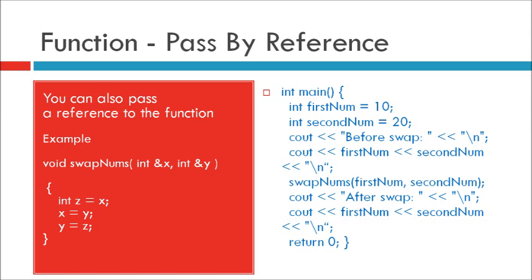Cout after swap, cout firstNum secondNum, return 0.